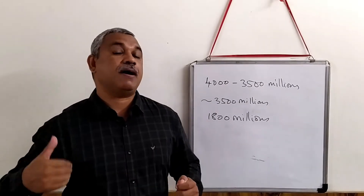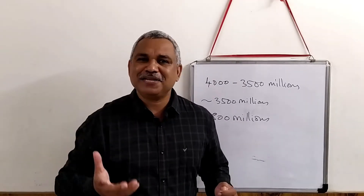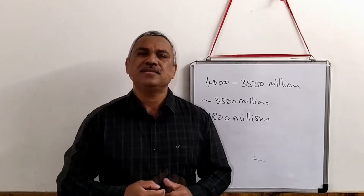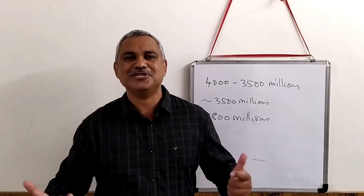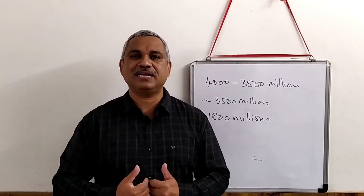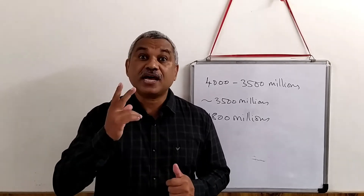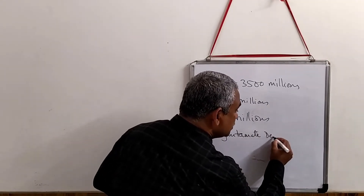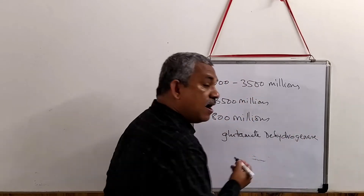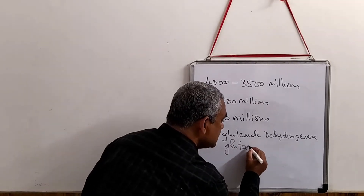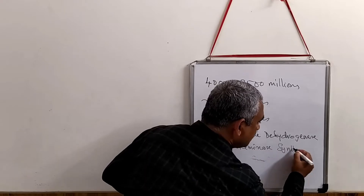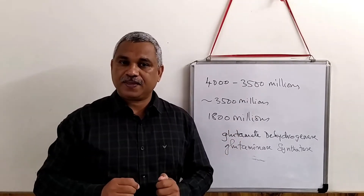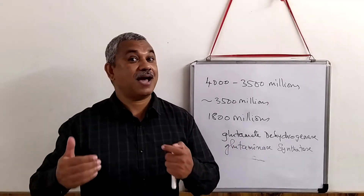Nitrogen present in the atmosphere comes into living systems only through nitrogen fixation by bacteria. This fixed nitrogen is slowly converted into amino acids, and we get our amino acids exclusively through diet. There are two important enzymes: glutamate dehydrogenase and glutaminase.